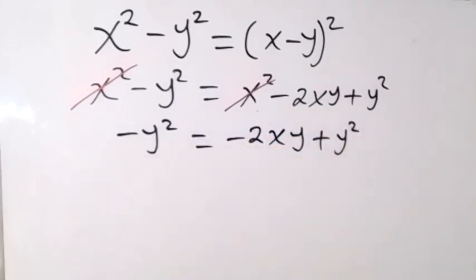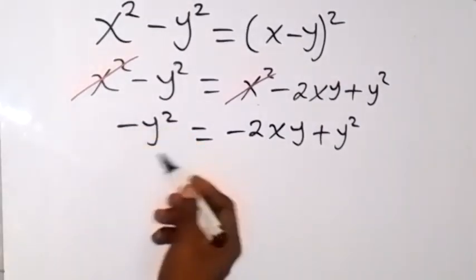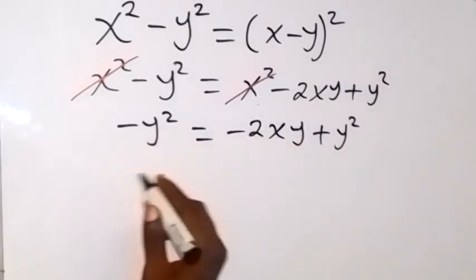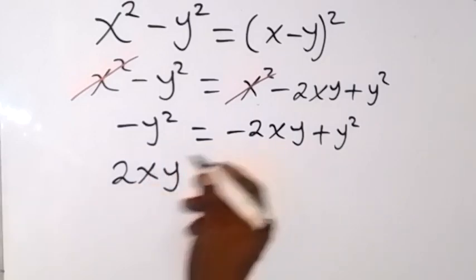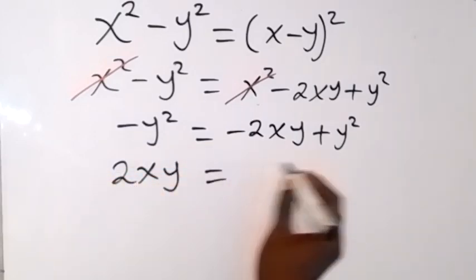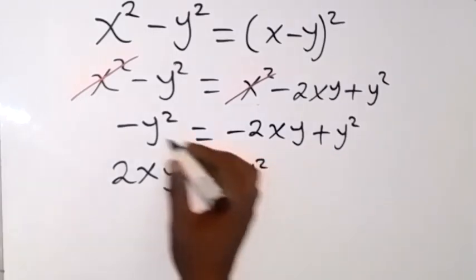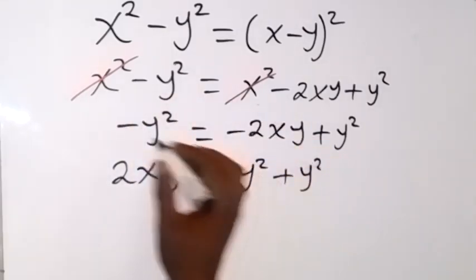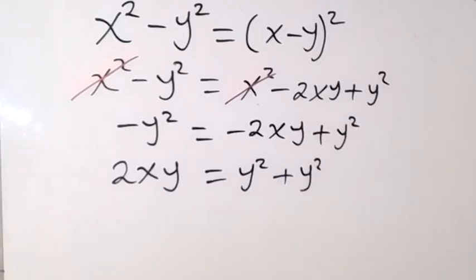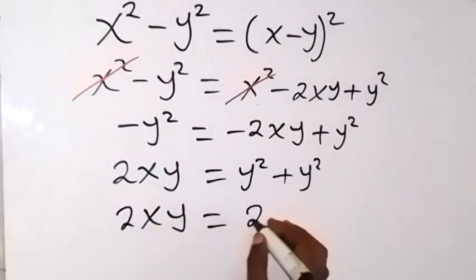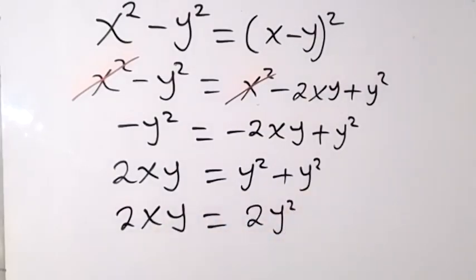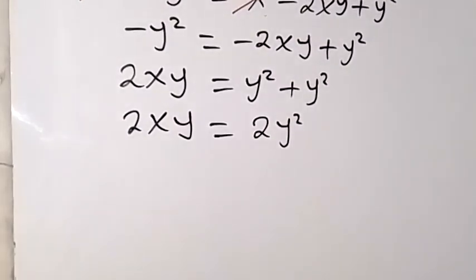Now let's bring minus y squared to this side and take minus 2xy to the other side, so that we have 2xy — because the minus becomes plus — equals y squared plus y squared. This gives us 2xy equals 2y squared.